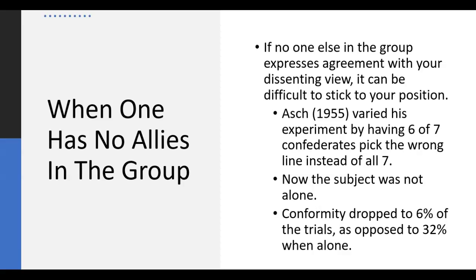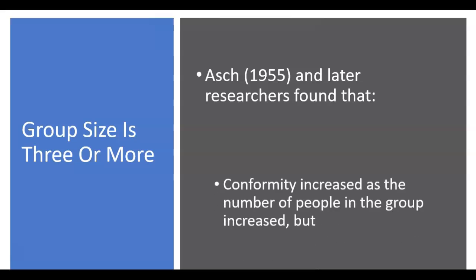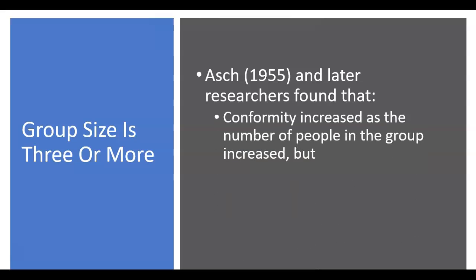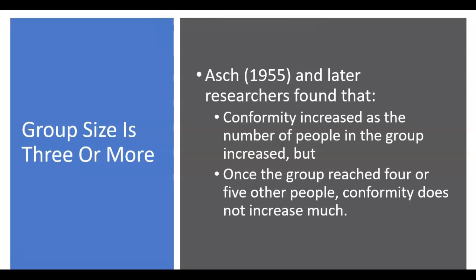Conformity dropped from about 37% to around 5% of trials when a partner was present. In terms of group size, Asch and later researchers found that conformity generally increases as the number of people in the group increases, but it tends to plateau. Once the group size reaches four or five, you don't get much added benefit from increasing the size beyond that. With just one or two people the effect is weaker; three adds a little more; four or five is the plateau point.